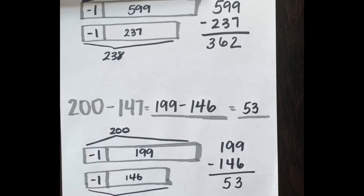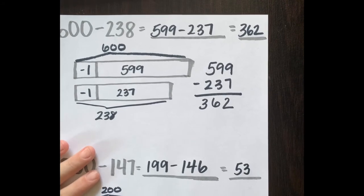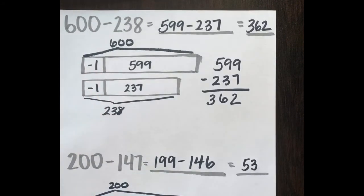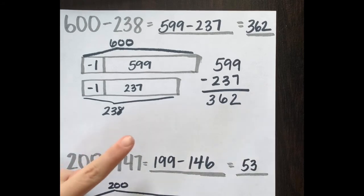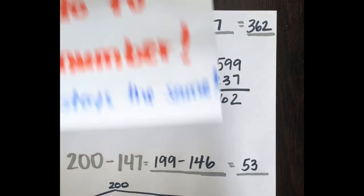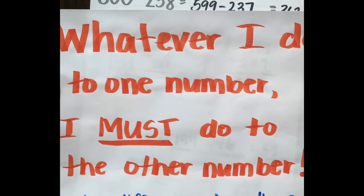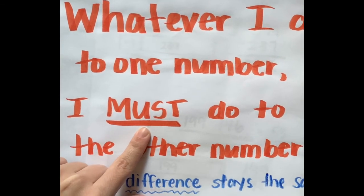Here is your overview of this new strategy using tape diagrams and compensation or same differences. It's very similar to one of the days we talked about last week. Always remember: whatever I do to one number, I must do to the other number.